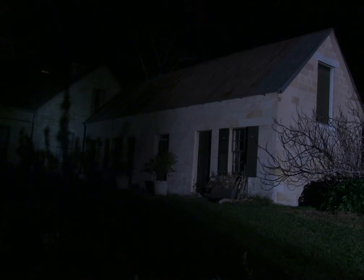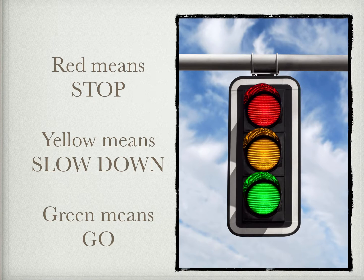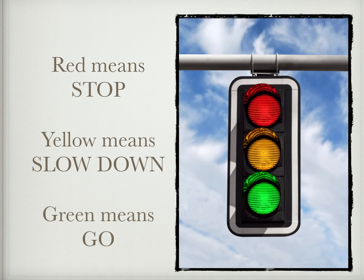Think about any time you're out driving with mom or dad or another adult and you see a traffic light. Just with the lights, they give us messages. We know red tells us to stop, yellow tells us to slow down, and green tells us it's safe to go.